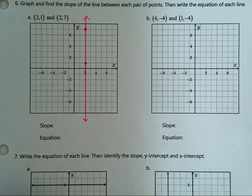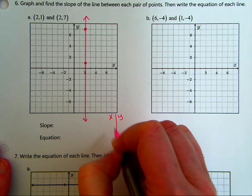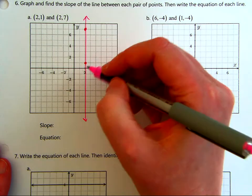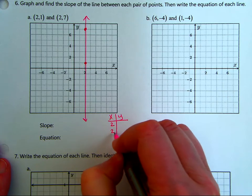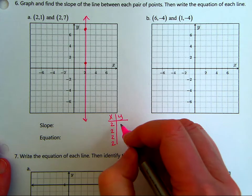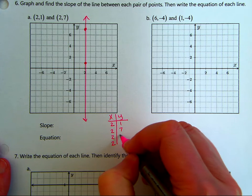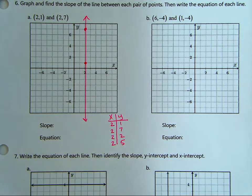You could think of it like if we made an xy table, the x of this line, the x is always 2. So we've got 2,1, 2,7, we'd have 2,2, 2,5, whatever. It doesn't matter what the y value is. See how the x is always 2?